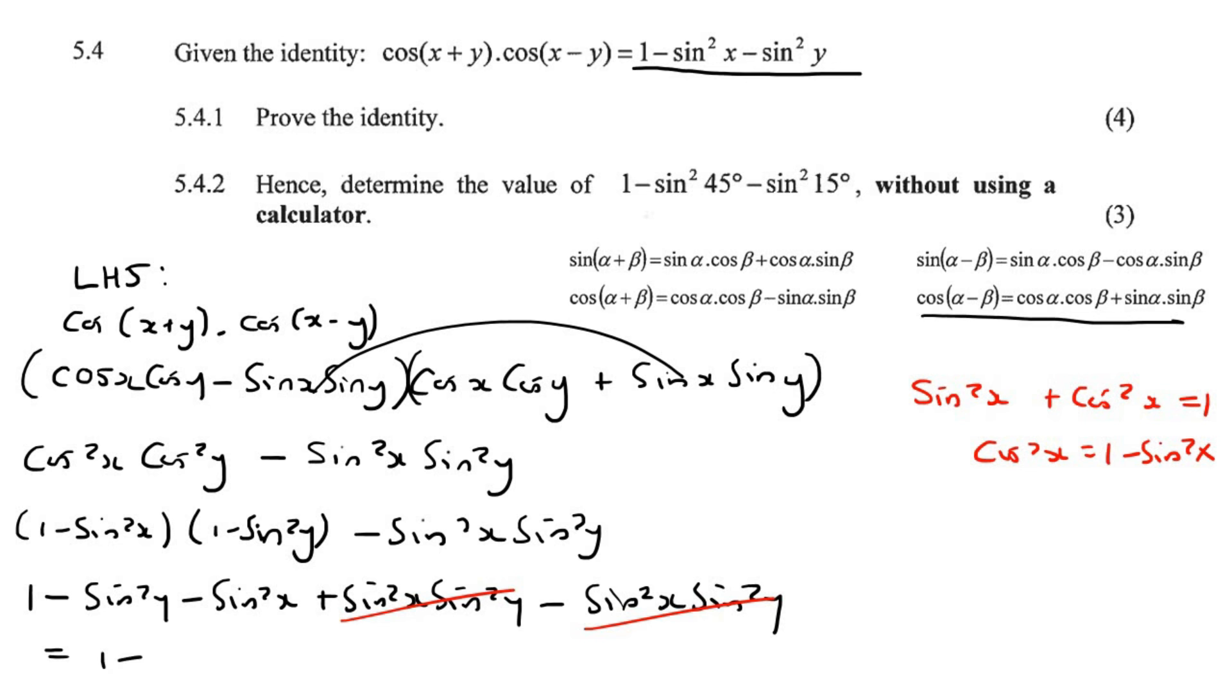And then we are left with 1 - sin²y - sin²x, which is what we have here. And so we can then say, therefore, left-hand side is the same as the right-hand side.